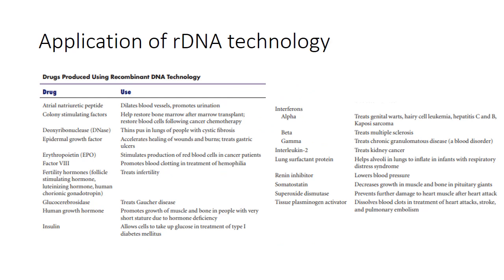The applications of recombinant DNA technology include the production of different types of drugs. Genes are inserted into bacteria, which then produce the desired proteins. For example, epidermal growth factor is used to treat gastric ulcers; insulin is used for diabetes; and growth hormone is also produced this way. Other products include thrombin inhibitors, lung surfactant proteins, and interleukins — different types of drugs used to treat various disorders. Thank you.